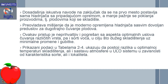Dosadašnja iskustva navode na zaključak da se na prvo mesto postavlja sama hladnjača sa pripadajućom opremom, a manje pažnje se poklanja plodovima koje se skladište. Preovlađuje mišljenje da je moderna opremljena hladnjača sasvim dovoljan preduslov za dugotrajno čuvanje plodova. Ovakav pristup nije prihvatljiv — pogrešan je sa aspekta optimalnih uslova čuvanja različitih vrsta, a u okviru vrsta različitih sorti, u cilju što dužeg skladištenja uz minimalne promene i gubitke. Prikazani podaci ukazuju da postoje razlike u optimalnim temperaturama skladištenja, ali i sastavu atmosfere u ULO, u zavisnosti od karakteristika sorte, ali i lokaliteta gajenja.